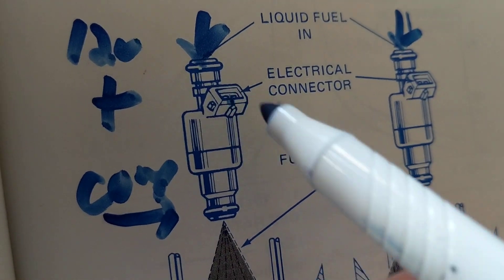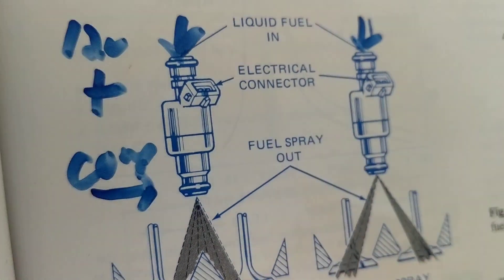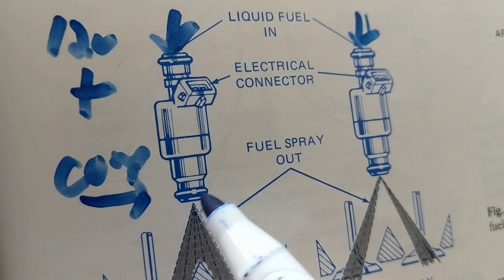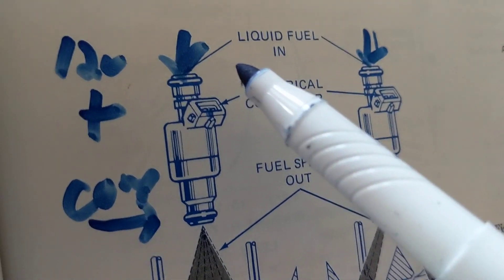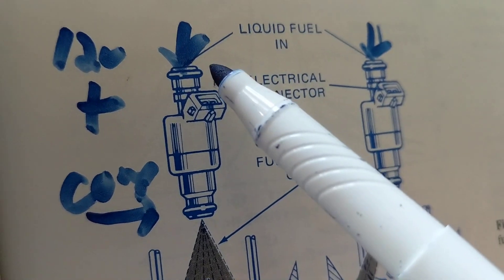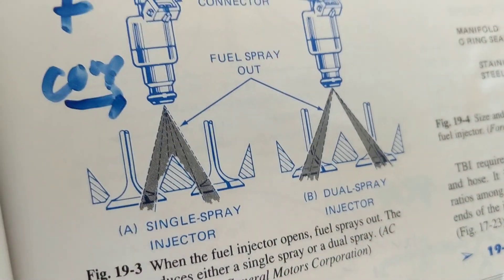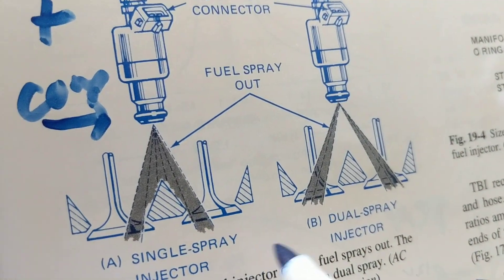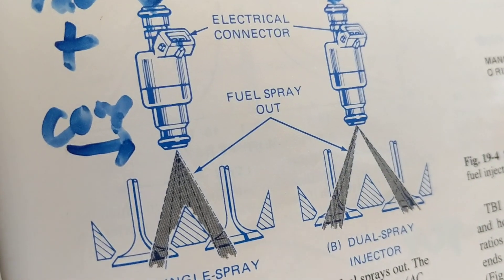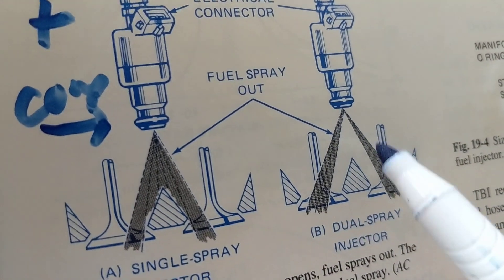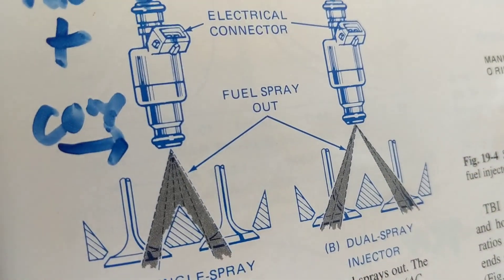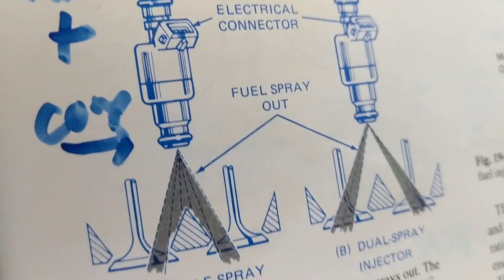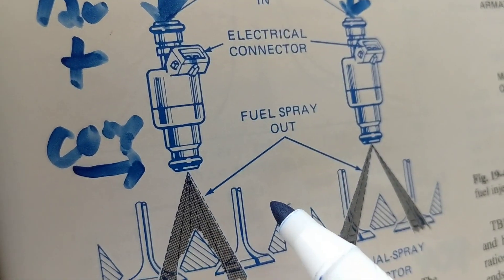The control signal comes from the computer — the computer controls the injector by giving it a ground. So one terminal is 12 volts and one is the computer ground. The computer will control how often the injector is open. After all, it is electrical. The liquid fuel comes in and the spray that comes out is called a mist. It can be a single spray or a dual spray — dual meaning two mist streams coming out.